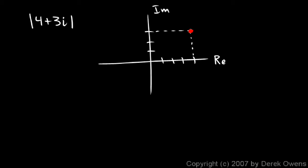That's the number 4 plus 3i. The distance from the origin is this distance right there. So how long is that line segment? Well we can make a little triangle.